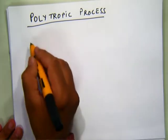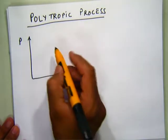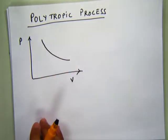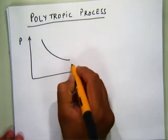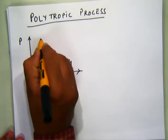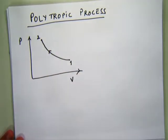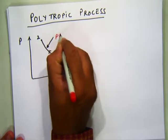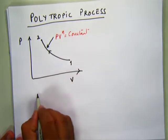In the polytropic process, if we draw the P-V diagram, we can show the process on it. Suppose compression takes place — the process starts from point 1 and in compression volume gets reduced, ending at point 2. The direction of the process is from 1 to 2. For the polytropic process, this is known as PV raised to n equals constant. This is the case for compression.